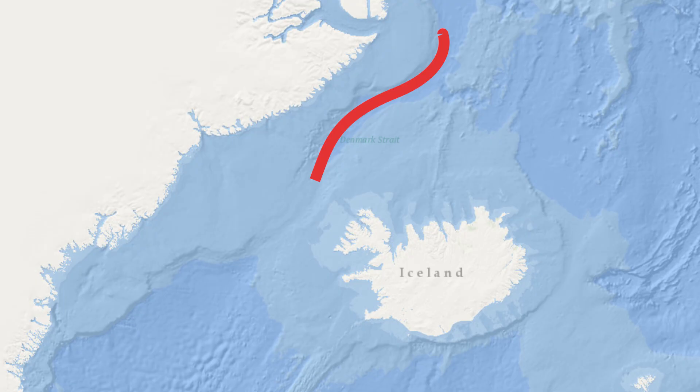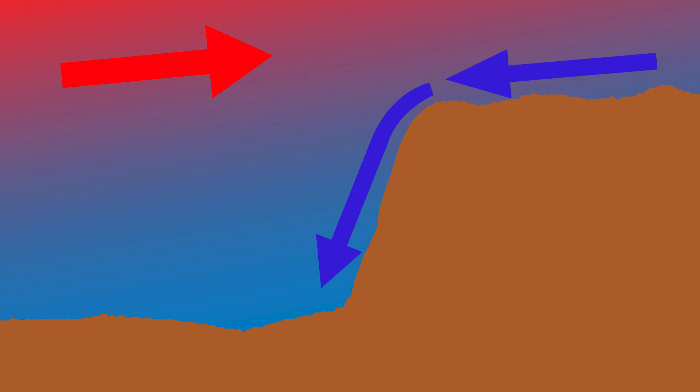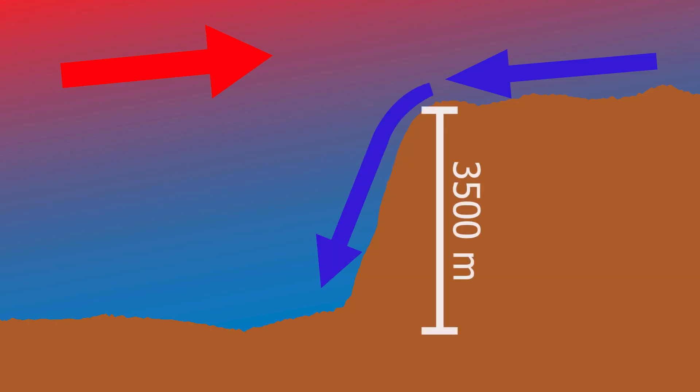The ridge that formed at the edge of the continental bound now creates a steep slope in the south-western direction. When the two currents collide in this area, the cold Greenland current gets pushed down immediately upon crossing the ridge, making it fall down this massive 3,500-meter tall cliff — which makes it the largest underwater waterfall in the world.